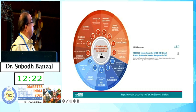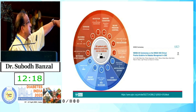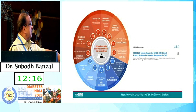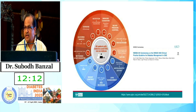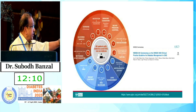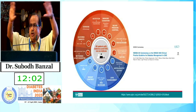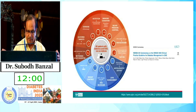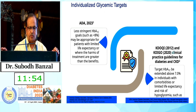KDIGO — Kidney Disease: Improving Global Outcomes — guidelines address nutrition, glycemic targets, exercise, smoking cessation, blood pressure, RAAS blockade, and dyslipidemia. As physicians, we must manage antiplatelet agents, lipid management, RAAS blockade, and weight control for the overall management of patients with diabetes and diabetic kidney disease.